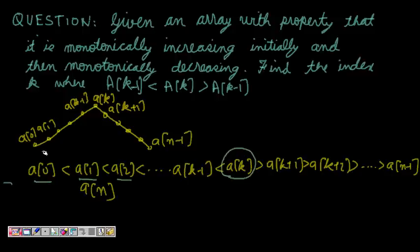So it increases initially, comes to the peak, and then it falls down. So you have to find k, the index where it is the peak. So how will you do?